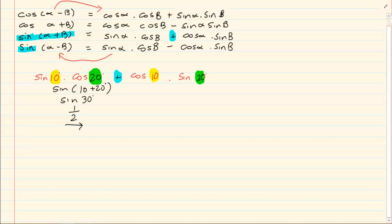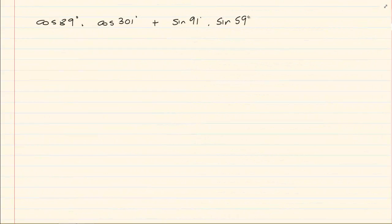Now when you are using this formula, you will notice that the questions they give you are not always so simple — the angles don't always coincide. In the following example, the first angle in the first term is 89, but the first angle in the second term is 91. Then we have 301 as the second angle and 59 as the second angle. When we have angles that are not coinciding, we have to do reduction, so you have to be familiar with all your grade 11 reduction.